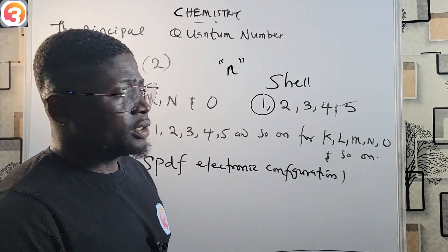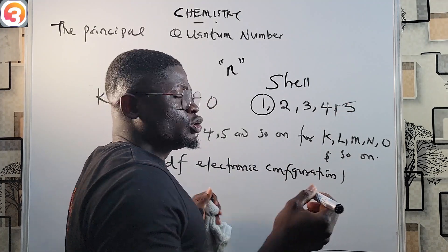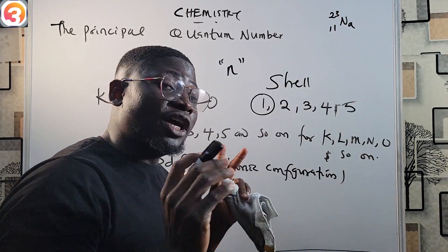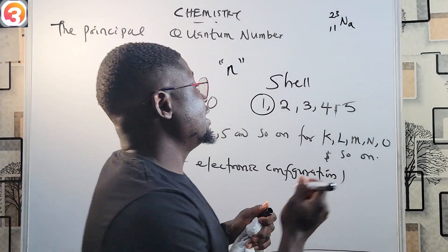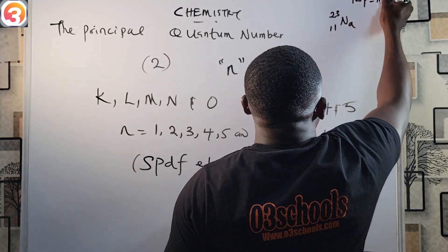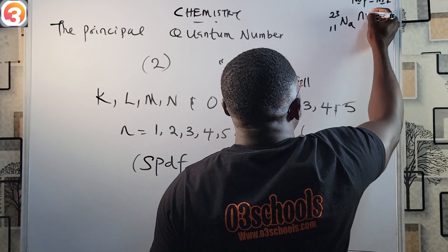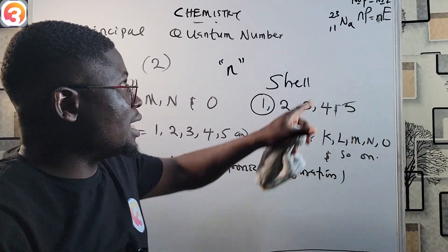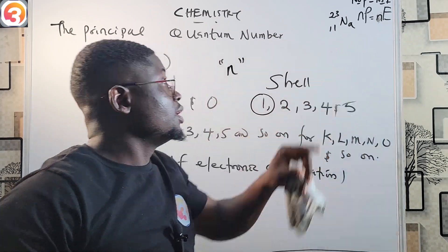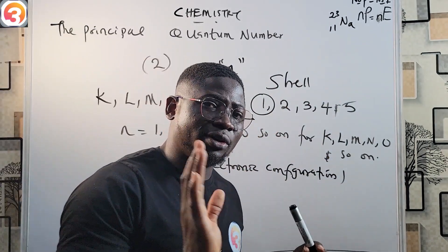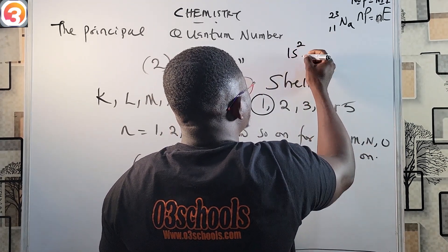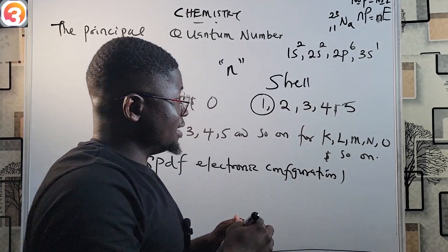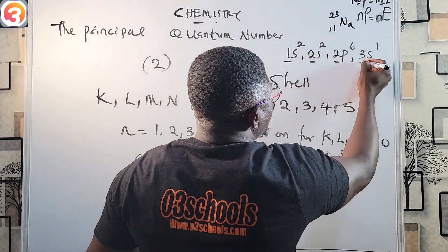For example, the electronic configuration of a sodium atom — Na, mass number 23, atomic number 11. For a neutral atom, the number of electrons equals the number of protons. So a neutral sodium atom has 11 electrons, and its electronic configuration is 1s², 2s², 2p⁶, 3s¹.